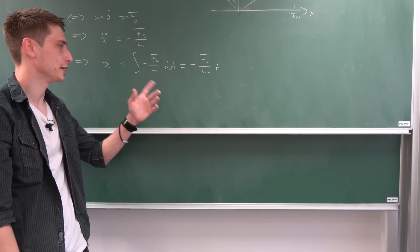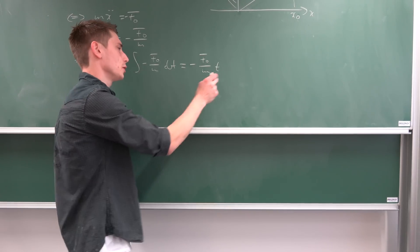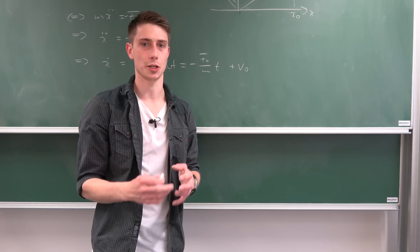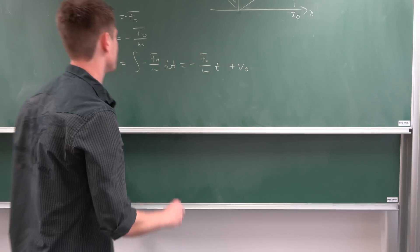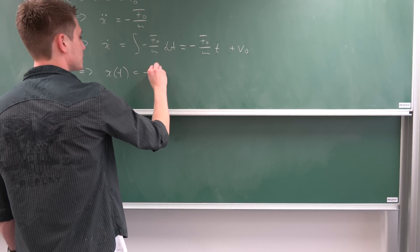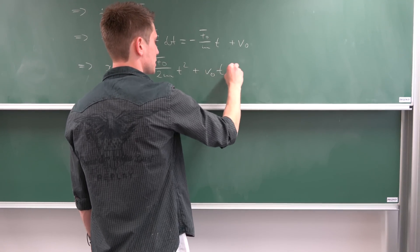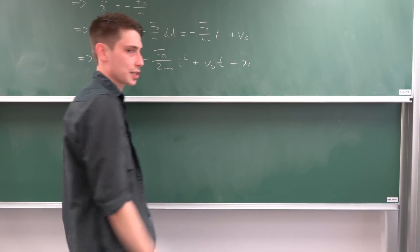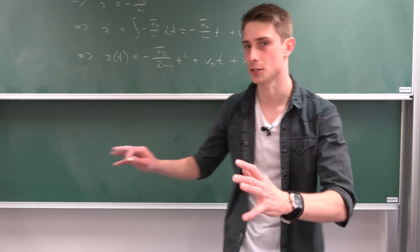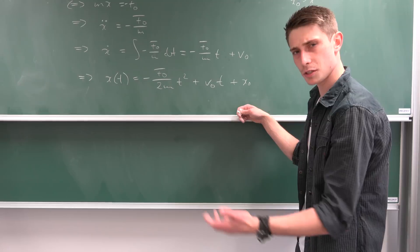Let's do some dimensional analysis. This side is a velocity, so we need a velocity on the other side — v0. Now integrating a second time gives us the solution x(t): x equals negative f0 over 2m times t squared, plus v0 times t, plus a constant x0. Dimensionally we need something in units of length on this side. We have now found an analytical expression.